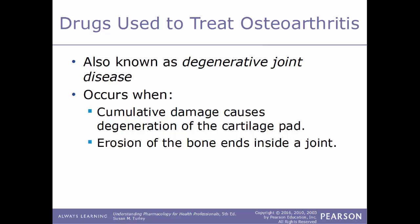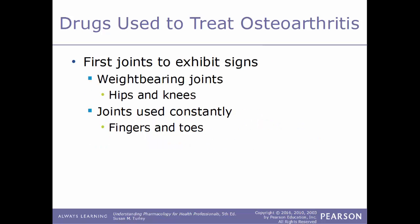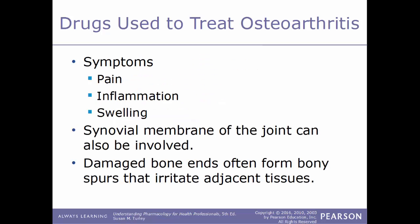Osteoarthritis is also known as degenerative joint disease. It occurs when there is cumulative damage that causes degeneration of the cartilage pad, induced by normal wear and tear on the joints — essentially an erosion of the bone ends inside a joint. The first joints to exhibit signs are the weight-bearing joints such as the hips and knees, and also joints used constantly like the fingers and toes. Common symptoms include pain, inflammation, swelling, and the synovial membrane of the joint may also be involved. Damaged bone ends often form bony spurs that irritate adjacent tissues.